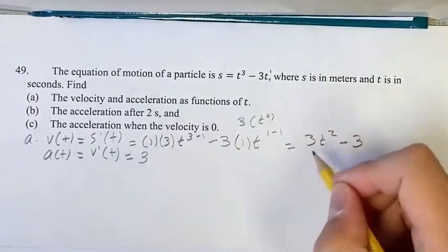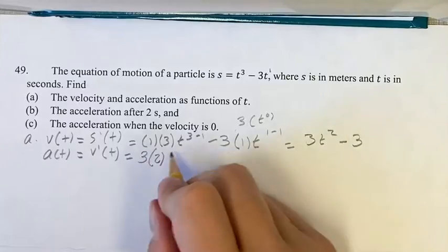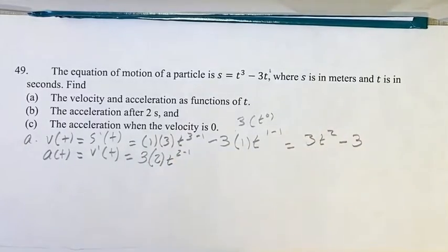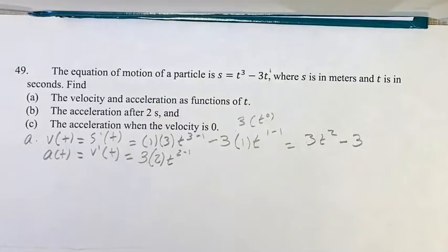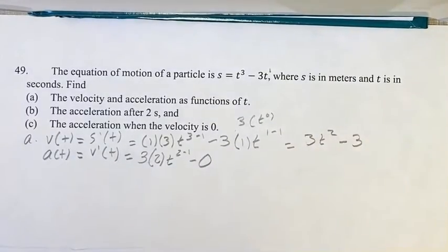Multiply it by your exponent and subtract 1 from the exponent to get your new exponent. This is a constant, so its derivative is just 0, so we can think of that as minus 0.